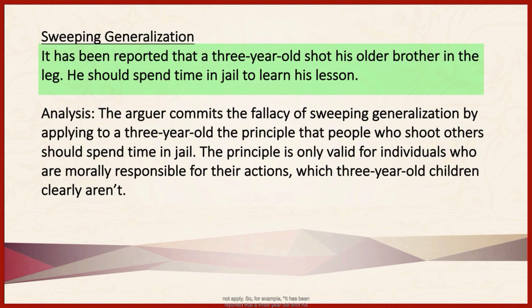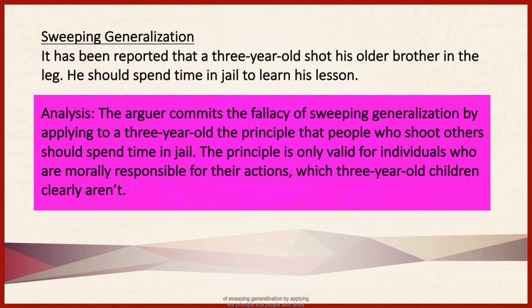For example, it has been reported that a three-year-old shot his older brother in the leg. He should spend time in jail to learn his lesson. In the analysis, you'd say the arguer commits the fallacy of sweeping generalization by applying the principle that people who shoot others should spend time in jail to a three-year-old. But this principle is only valid for individuals who are morally responsible for their actions. Three-year-old children are not.